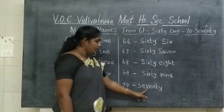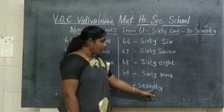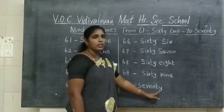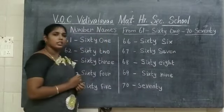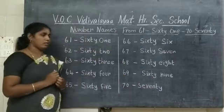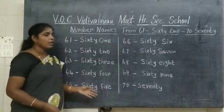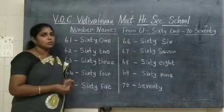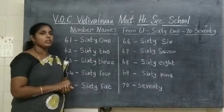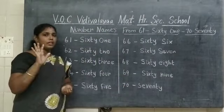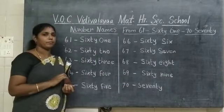Yes, S-E-V-E-N-T-Y. 70. Okay children, did you understand? Yes. Take a note — write at least 2 to 3. Okay children. Bye bye bye.